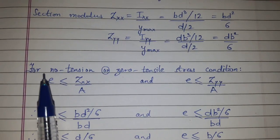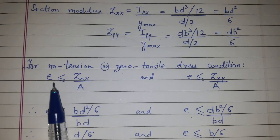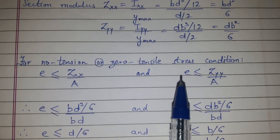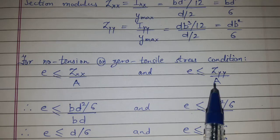For no tension or zero tensile stress condition, eccentricity e must be less than or equal to zxx divided by A, and eccentricity should be less than or equal to zyy divided by A.